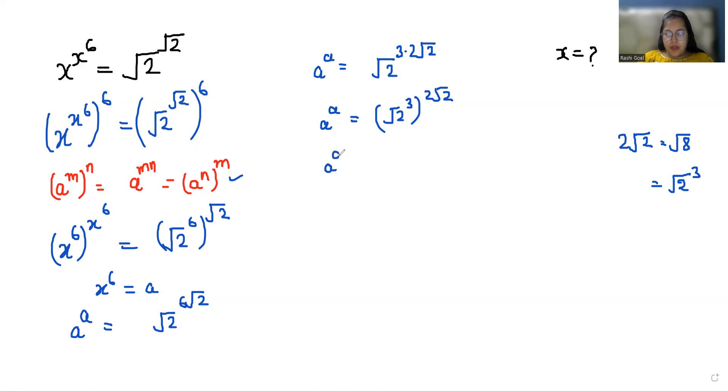So a^a equals (√(2^3))^(√(2^3)). Now if we compare both sides, the value of a is √(2^3).